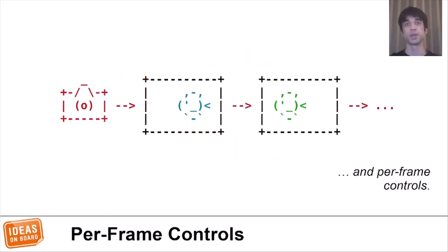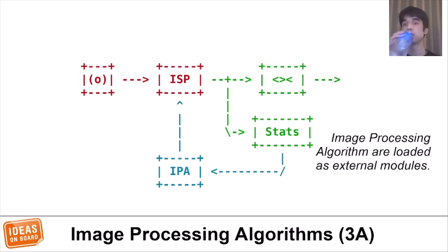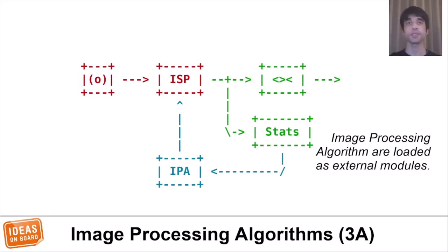LibCamera also had to support per-frame controls, which guarantee that control parameters are applied precisely to the frame that the application requested. Image processing algorithms, which as we have seen are an important part of the camera pipeline, are also some of the most protected vendor IP.